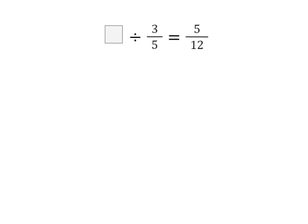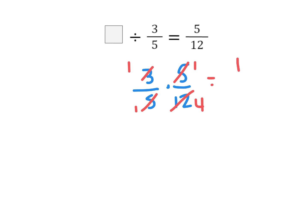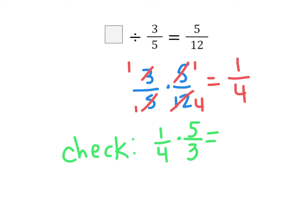Try this one: a missing dividend divided by 3 fifths is equal to 5 twelfths. What's the dividend? I would multiply my divisor and my quotient. I can simplify the 5 and the 5 down to 1 and 1, and 3 and 12 simplify by sharing a factor of 3. So the answer is 1 fourth. For our check: 1 fourth divided by 3 fifths is the same as times 5 thirds. I cannot simplify, so that gives 5 twelfths. I was correct.